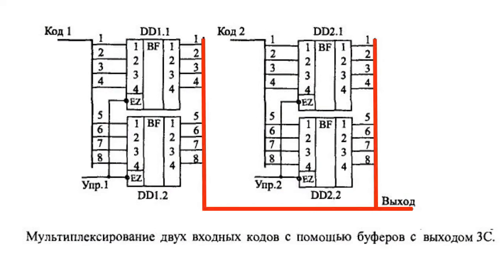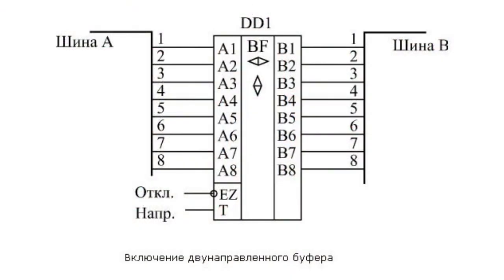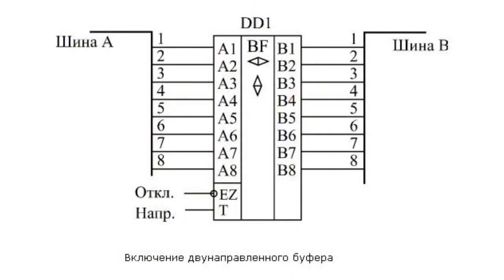Transfer of each of the two input codes to the output is permitted by their own control signal. As opposed to unidirectional buffers, bidirectional ones enable signal transfer in both directions. Dependent on the special T driving signal, inputs can become outputs and vice versa. Third-state EZ control is always present too — it can disable both inputs and outputs.